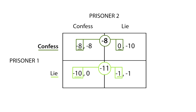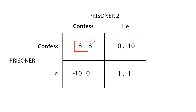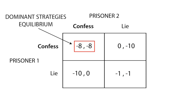Since the payoffs are the same for both players, we know that for player 2, confess will also be the dominant strategy. Confess-confess is the dominant strategy equilibrium in this game, since it is the set of strategies that maximizes each prisoner's utility.